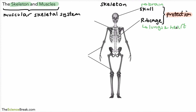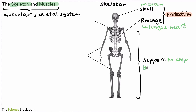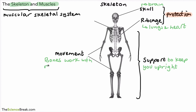Another role is to do with the whole skeleton together. Its job is for support — this means to keep you upright, the right way up, standing and not falling over. That's the second role of the skeleton. Another role is to do with movement: bones work with muscles in order to help you move, and we're going to look at that in more detail in a moment.